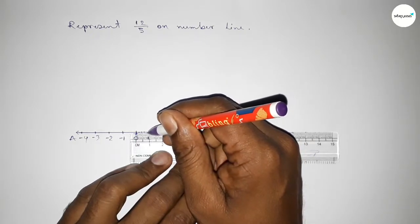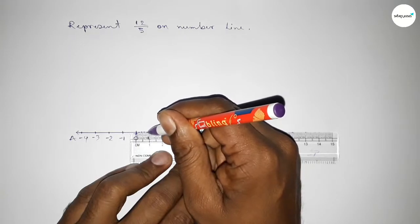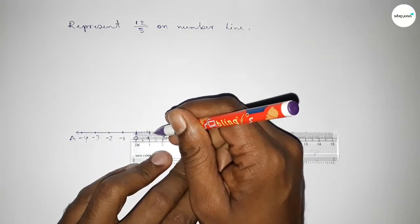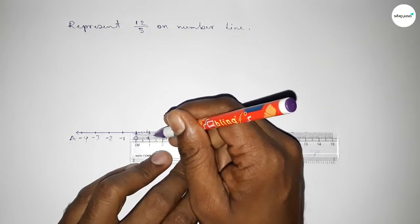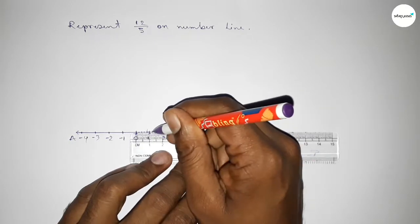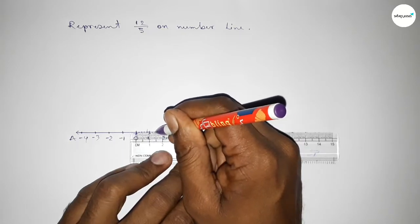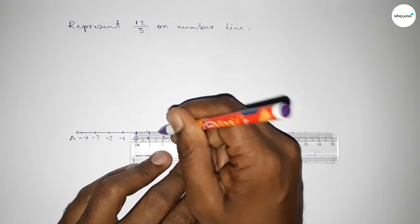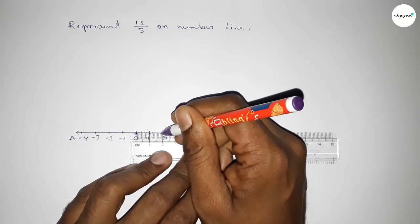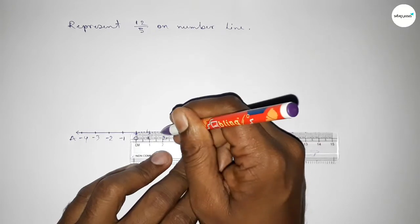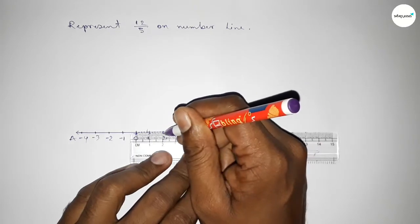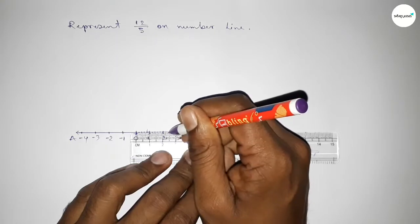Similarly, dividing the distance between one and two into five parts: the first part is 0.2, the second is 0.4, the third is 0.6, and the fourth is 0.8. Again dividing the distance between two and three into five parts in the same way.